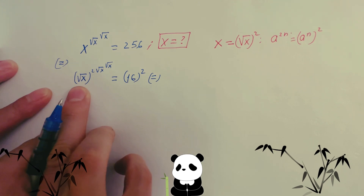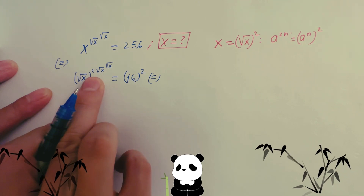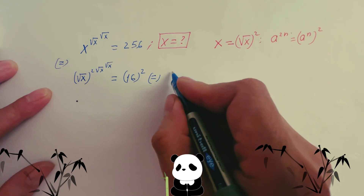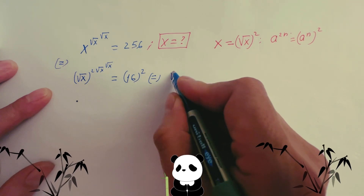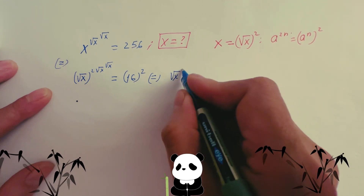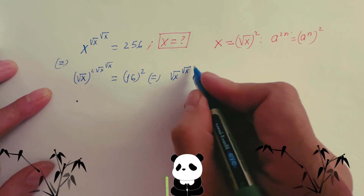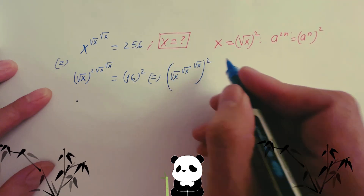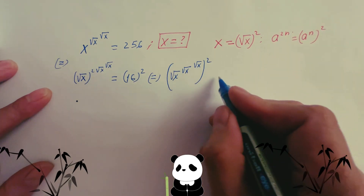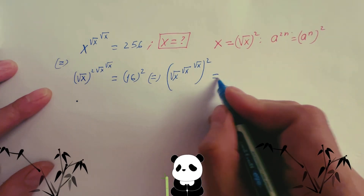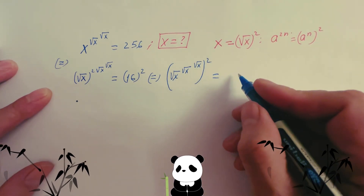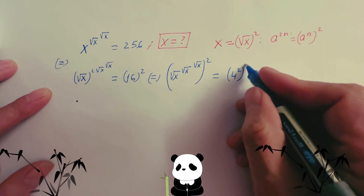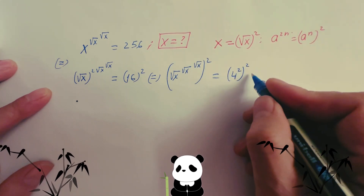So square root x to the power 2 — you can put the power 2 outside. You can write square root x, square root x, and then square root x to the power 2. And 16 you can write as 4 squared, then power 2 outside.